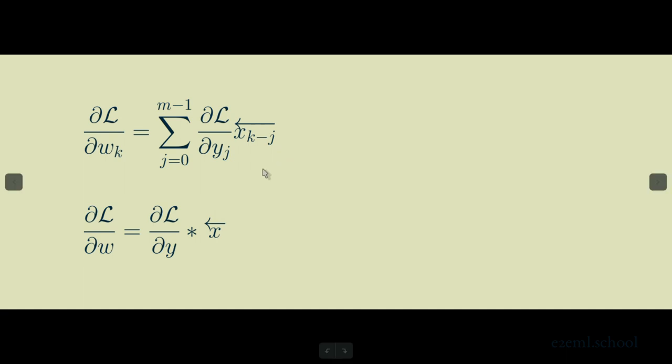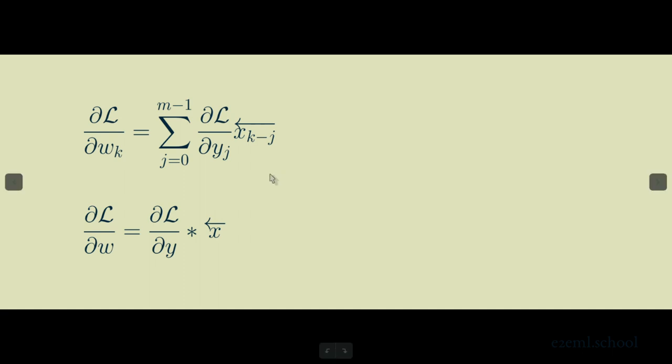Everything else stays the same, but now it's the summation of our output gradient times this flipped array, and it is in exactly the right form to be represented as a convolution. The weight gradient is the output gradient convolved with the input values first reversed left to right. This expression is probably easier to implement in code using explicit indexes that suggest iteration and summation, but for mathematical concision it's tough to beat the convolution operator.